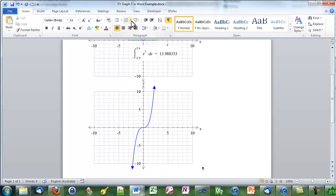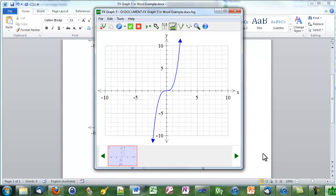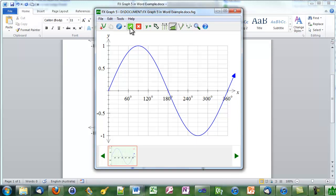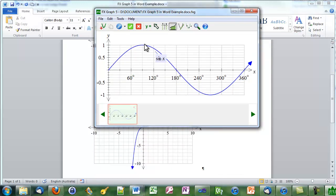We'll add a third function. So we go back to FX Graph, add a graph to the file, and this time we'll graph a sine curve. Before we push the green tick, we'll resize the graph so that when it goes back into Word, it's the size we're after.